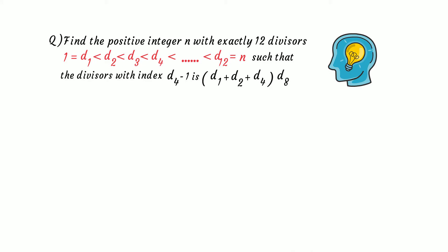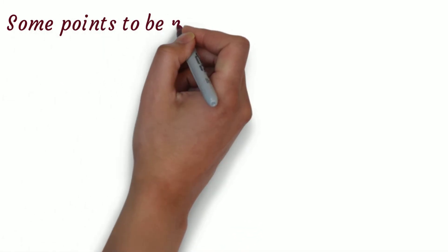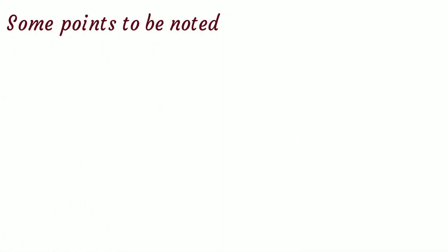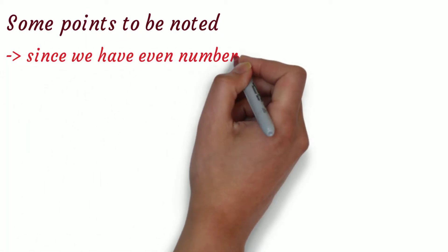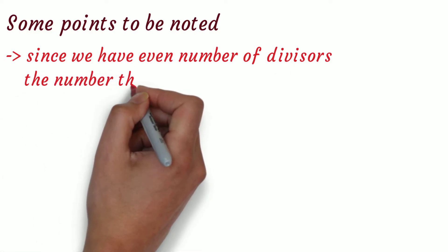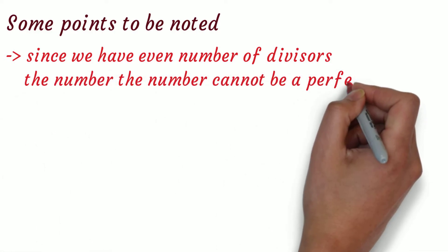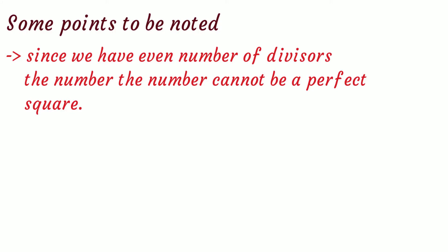The question may look weird at first view, but if you read it carefully it will be very easy. Before solving, we will cover some number theory fundamentals. The number of divisors is an even number, which means a perfect square is not possible here. We have the divisors given in ascending order.